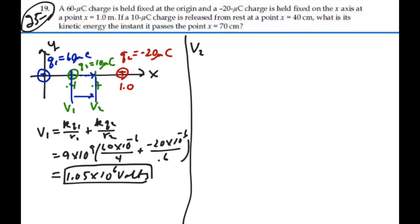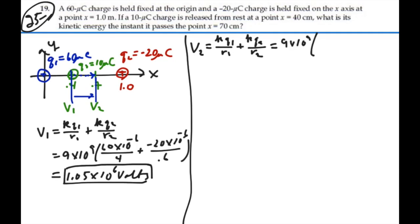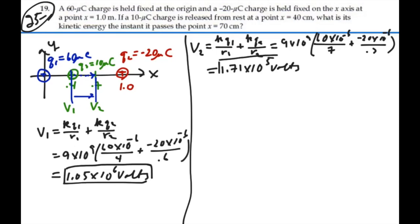The potential at point 2 is also kq1 over r1 plus kq2 over r2, but with different distances. That's 9 times 10 to the 9, times 60 micro coulombs divided by 0.7 meters, plus negative 20 micro coulombs divided by 0.3 meters. That equals 1.71 times 10 to the 5 volts. That's our second potential.